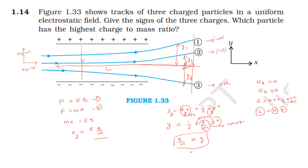So for question 1.14: the first particle is negative, the second particle is negative, the third particle is positive, and the charge-to-mass ratio is greatest for the third particle because its deflection in the y-direction is greater than that of the first and second particles.